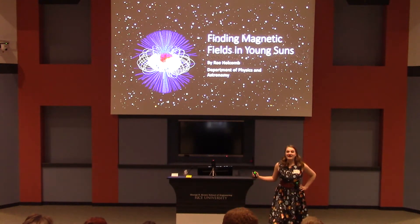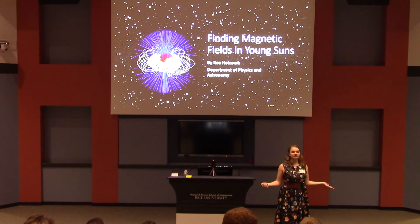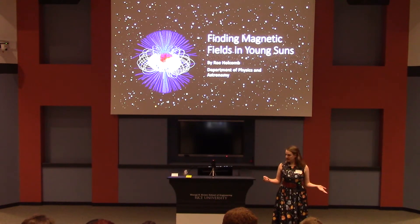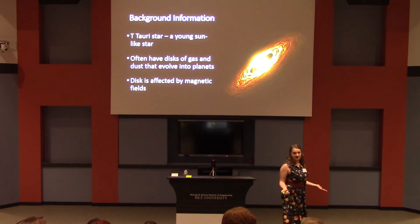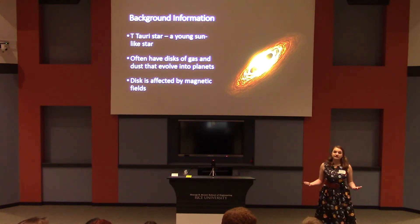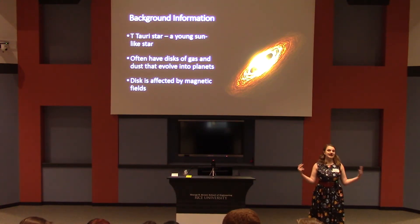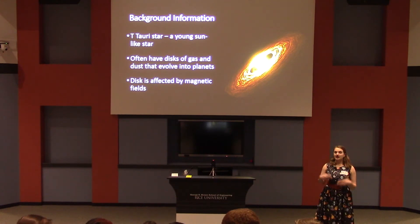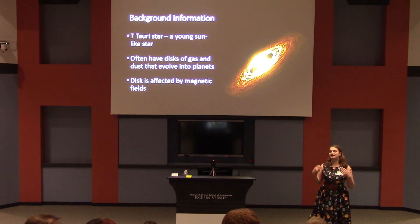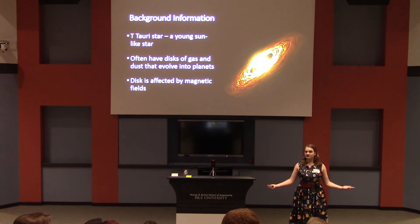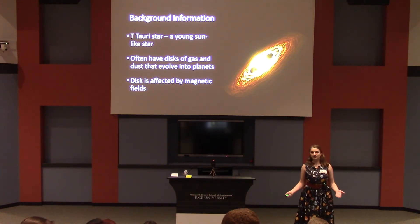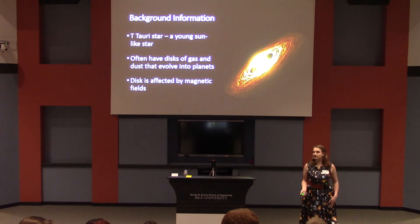I'm going to be talking to you today about the magnetic fields around younger versions of stars just like our own Sun. A little bit of background knowledge: these are called T-Tauri variables. One of their key features is that they have large disks of gas and dust around them. We really want to understand how these disks move because they eventually form into things like planets. And for obvious reasons, we're interested in planets and how they form — we live on one, so it's good to understand your home.